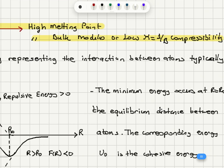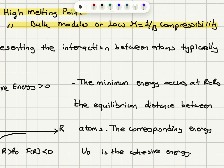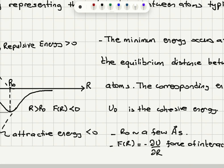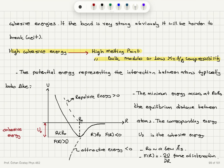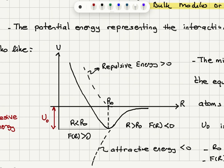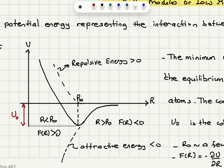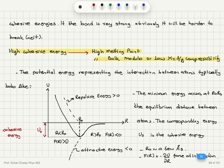The minimum energy occurs at R equals R0. This R0 value is of the order of a few angstroms. The force between atoms is inferred from minus the gradient of potential energy. For R less than R0, the force is positive and repulsive; for R greater than R0, the force is negative and attractive.